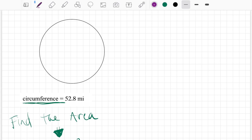With the circumference, I know that the circumference equals pi times the diameter. So we're able to find the diameter if we do this. So if I know the circumference, they tell us here is 52.8 miles.